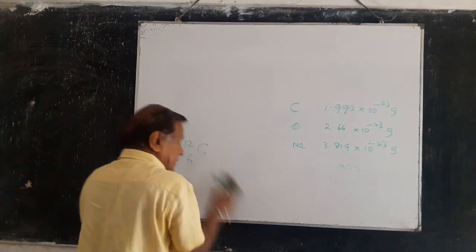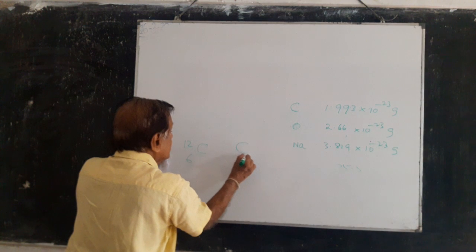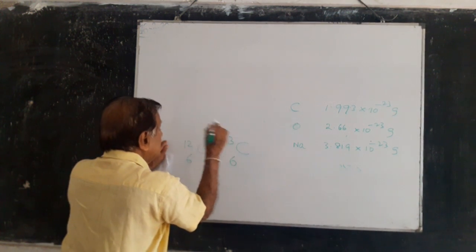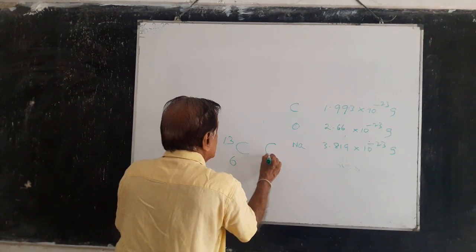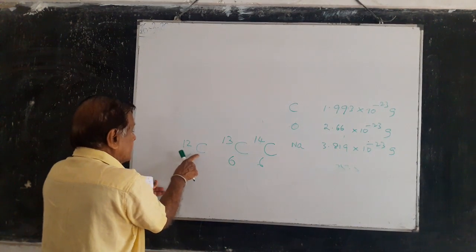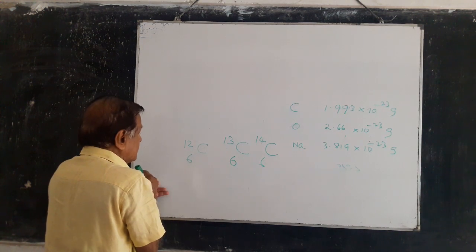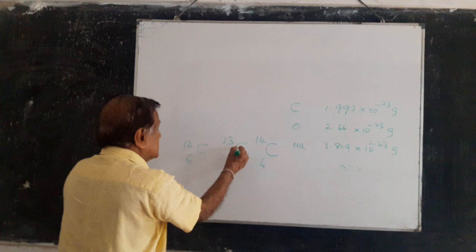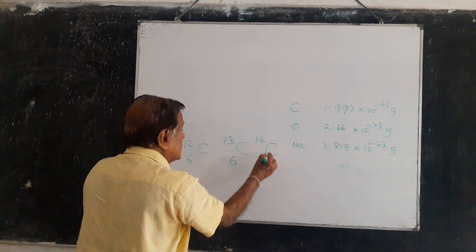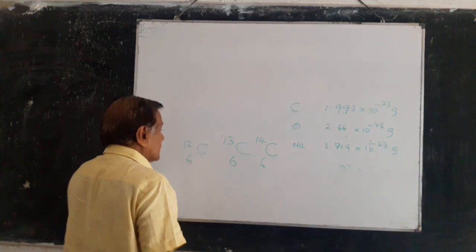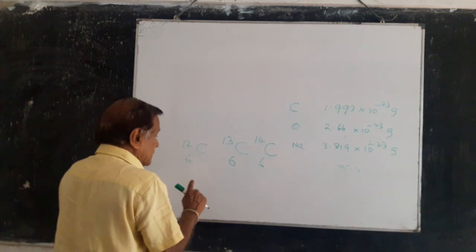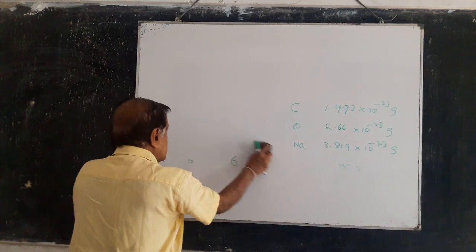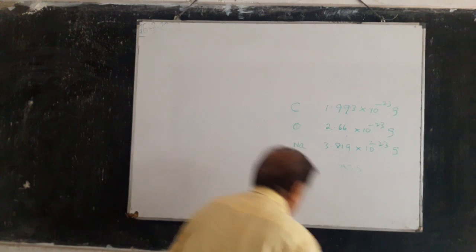In some carbon atoms, you have six protons and seven neutrons, so it is C13. The other isotope is C14, with six protons and eight neutrons. So C12, C13, and C14 are the isotopes of carbon. Out of these, the main isotope of carbon is C12, which has six protons and six neutrons.